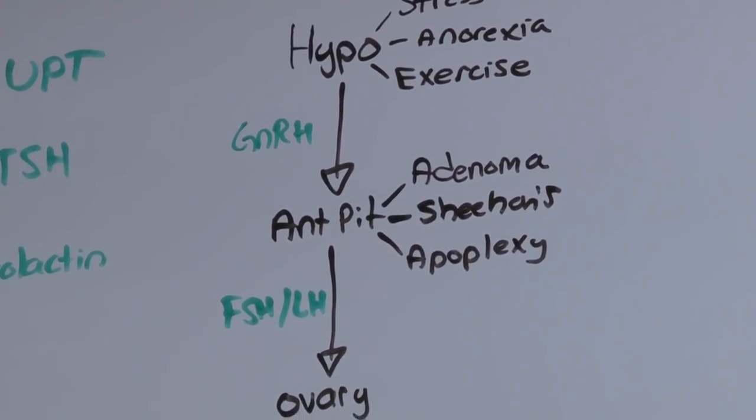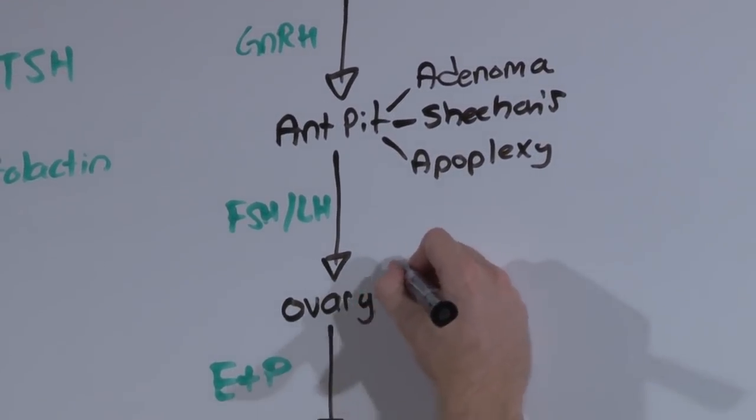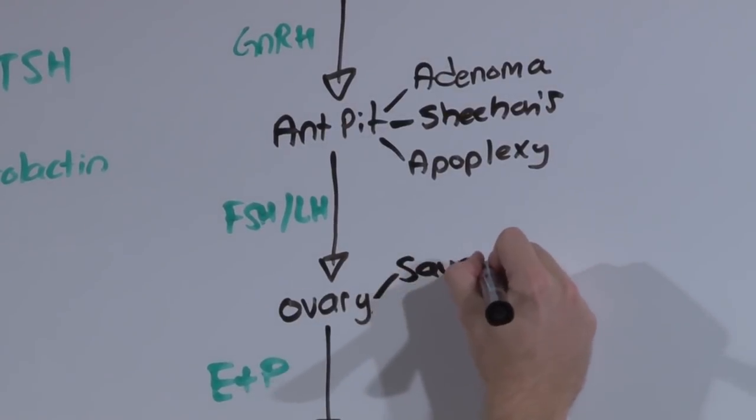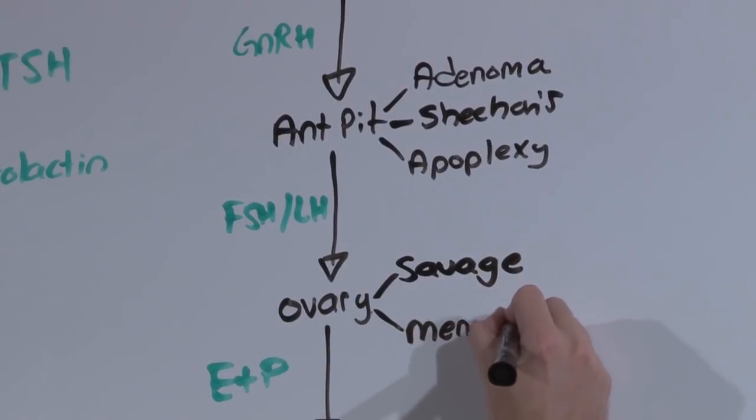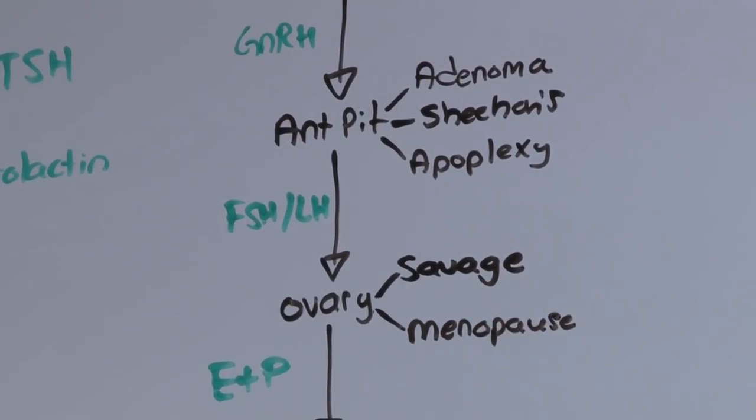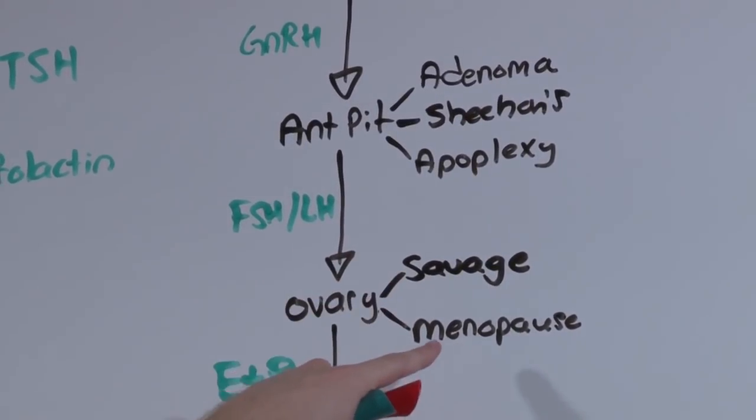At the level of the ovary, you can have, again, two problems. Either savage syndrome, resistant ovary syndrome, or menopause. In this instance, the anterior pituitary produces the signal, but the ovary simply does not respond to it.